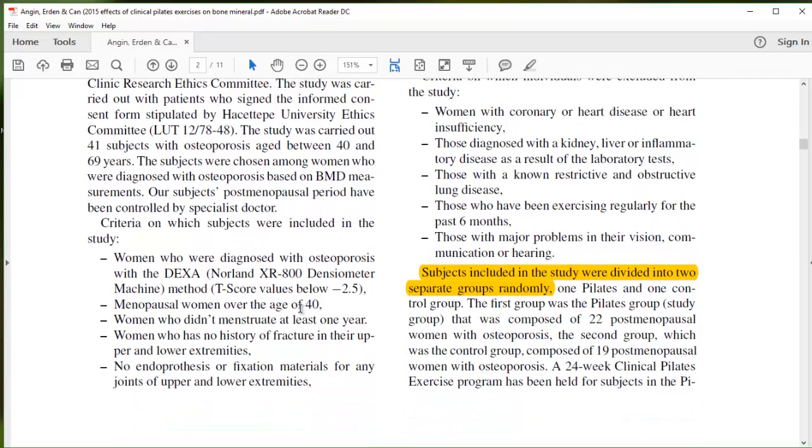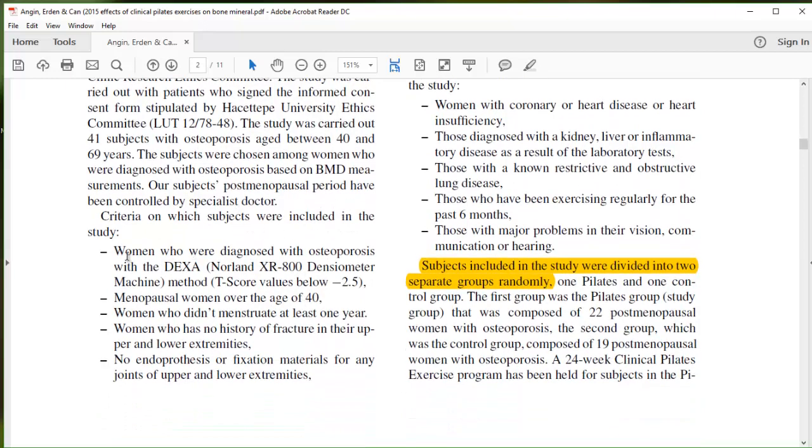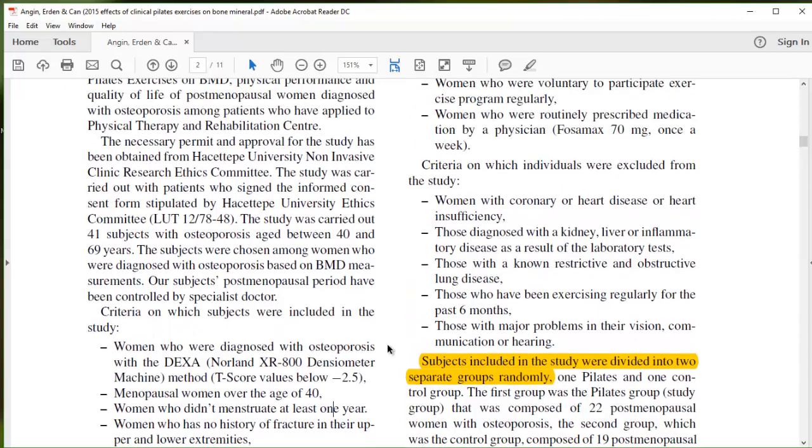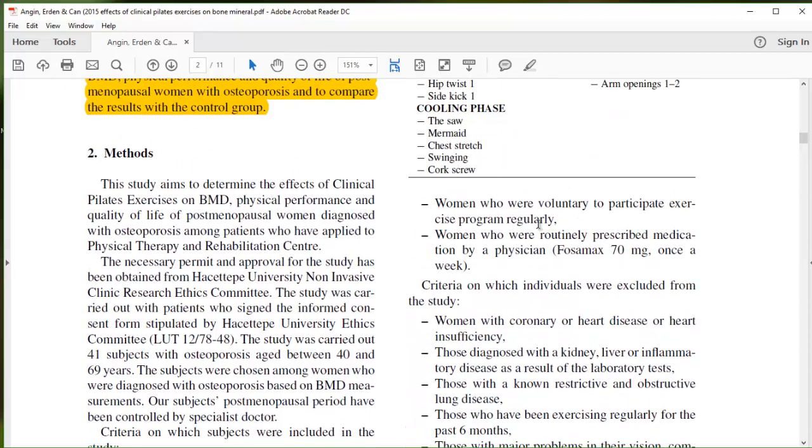So the criteria for inclusion was that they had to have a certain DEXA score. They were over the age of 40. Some women do hit menopause younger, and having been in menopause for at least one year. No history of fracture. So they're diagnosed with osteoporosis, no fracture yet.